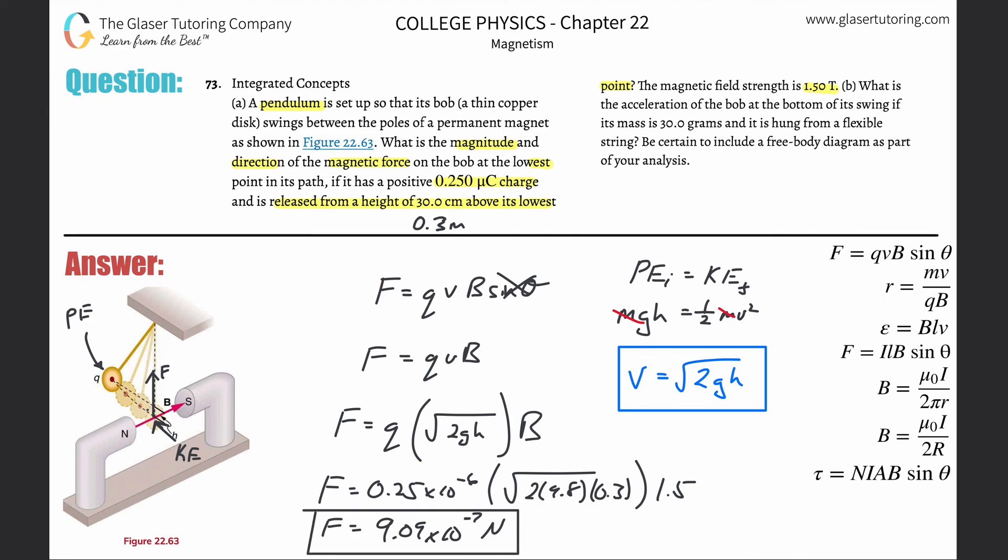Letter B now is saying what is the acceleration of the bob at the bottom of the swing if its mass is 30 grams.